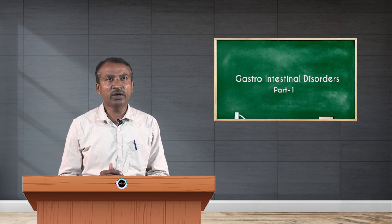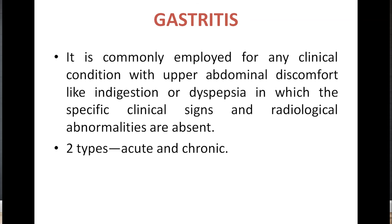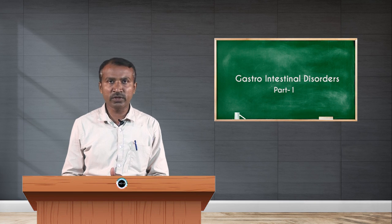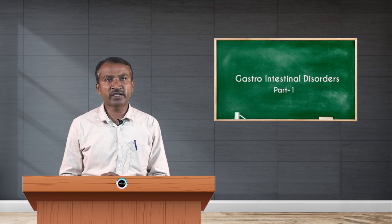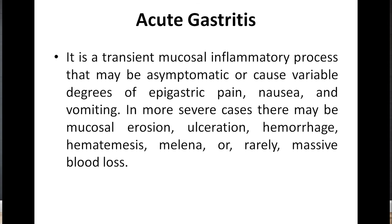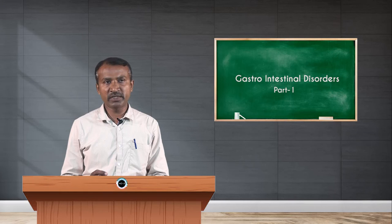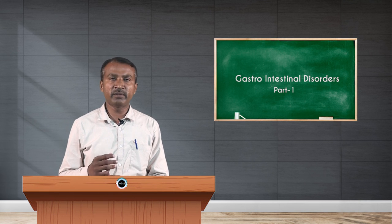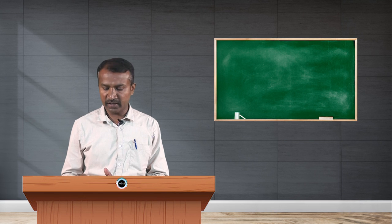There is a condition called gastritis, commonly employed for any clinical condition with upper abdominal discomfort like indigestion or dyspepsia, in which specific clinical signs and radiological abnormalities are present. There are two types: acute and chronic gastritis. Acute gastritis is a transient mucosal inflammatory process. It may be asymptomatic or cause epigastric pain, nausea, and vomiting. In severe cases, there may be mucosal erosion, ulceration, hemorrhage, hematemesis, and melena. Hematemesis refers to vomiting of blood or food contents turned coffee-ground in color.